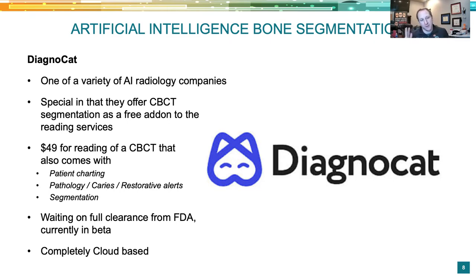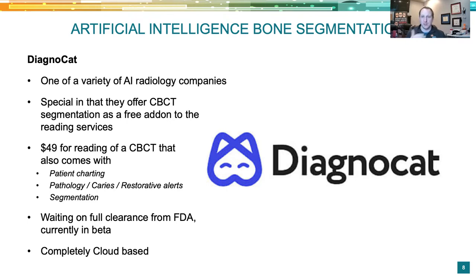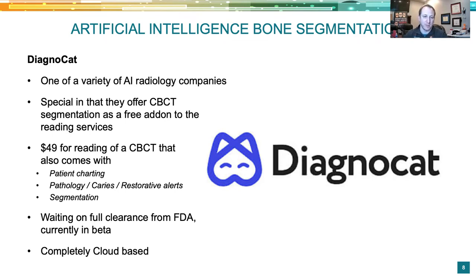For $49, Diagnacat doesn't just give you the segmentation. It also kicks out a radiology report — charting missing teeth, restorations, caries, and root canal pathology. It alerts you to pathology with confidence ratings, though it doesn't do differential diagnosis like a radiologist would. It produces a nice printable sheet. It's waiting on full FDA clearance and currently in beta in the U.S., but live in Canada. They say full U.S. availability is any day now — it's completely cloud-based.